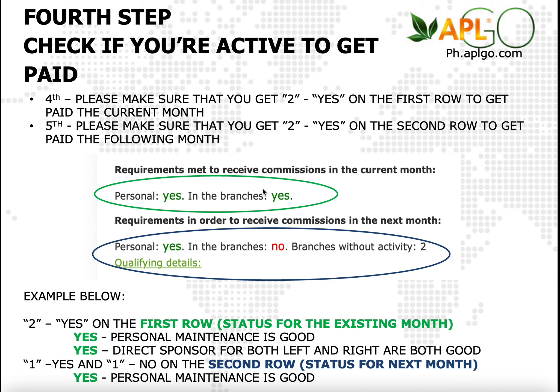Let's take a look at the example on the second row. The second row means you're going to be paid the following month, as long as you get two yeses. But in this case, the personal says yes — that means you did your job — but there is somebody in your branches that did not, or probably forgot to do their monthly PV maintenance. It says right here number two, so this means your second leg — one of your branches — probably didn't have anyone maintaining their monthly PV maintenance. Remember, there has to be at least one that maintains their PV maintenance, and it has to be done on the specific time.